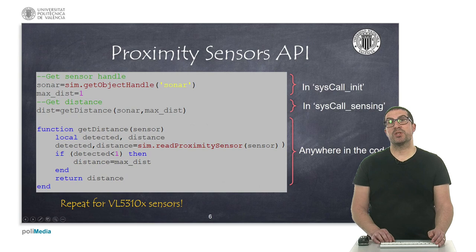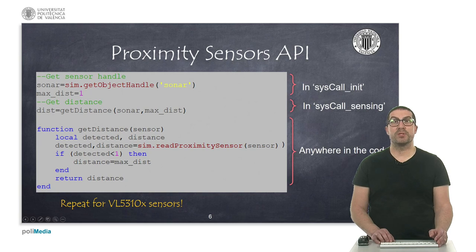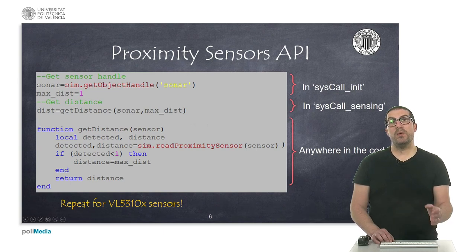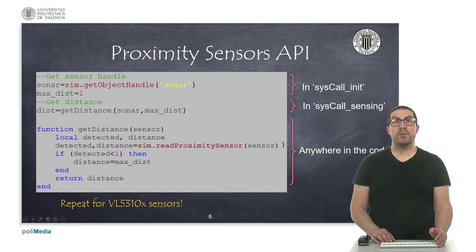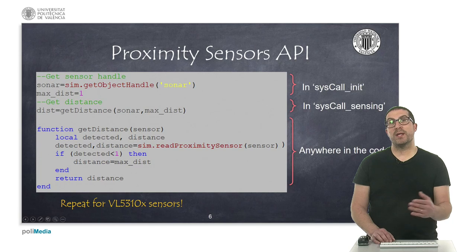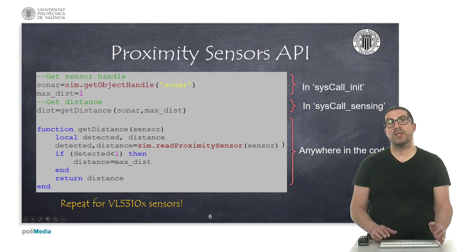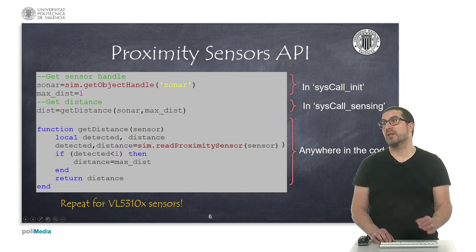In order to get data from a proximity sensor, we must use Lua code in a programming script associated to the robot main object. In the sysCall_init function, we should get the object handle — here we show the case for the ultrasonic sensor, but we should do the same for the LiDAR VL5310X sensors too. We have defined a maximum distance parameter, where the sensor no longer detects an object, and we will use this to ensure that even when there's no object detected, the function getDistance will always return a value between zero and the maximum distance.